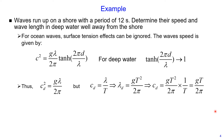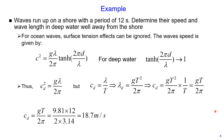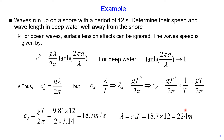Therefore, we can calculate the wave speed to be equal to 18.7 meters per second. And now we can calculate the wavelength as wave speed multiplied by wave period, giving us 224 meters.